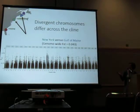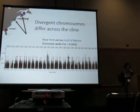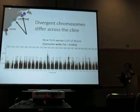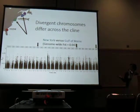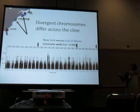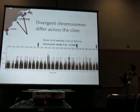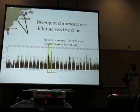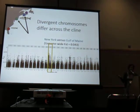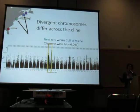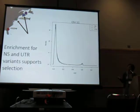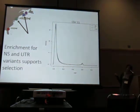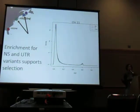Moving northward and looking between New York and Gulf of Maine, genome-wide FST is a little higher. The fixed SNP patterns seen in the previous comparison are absent, but we do see some more subtle differentiation spikes on chromosome 11. Zooming into chromosome 11, we again see enrichment for non-synonymous and UTR variants in the tail, which also supports selection driving this pattern.